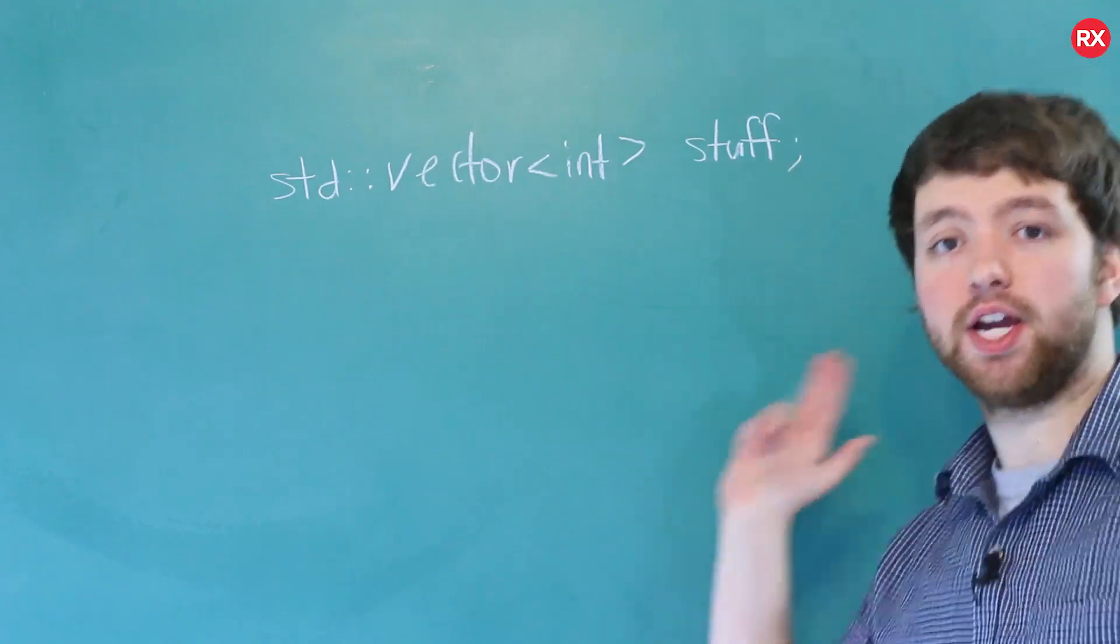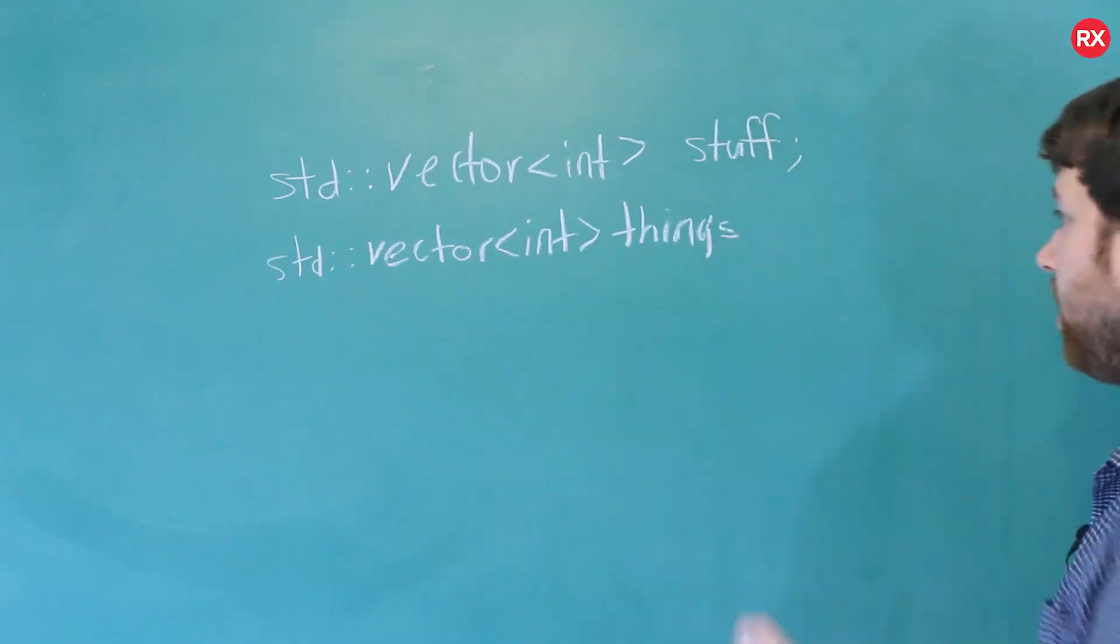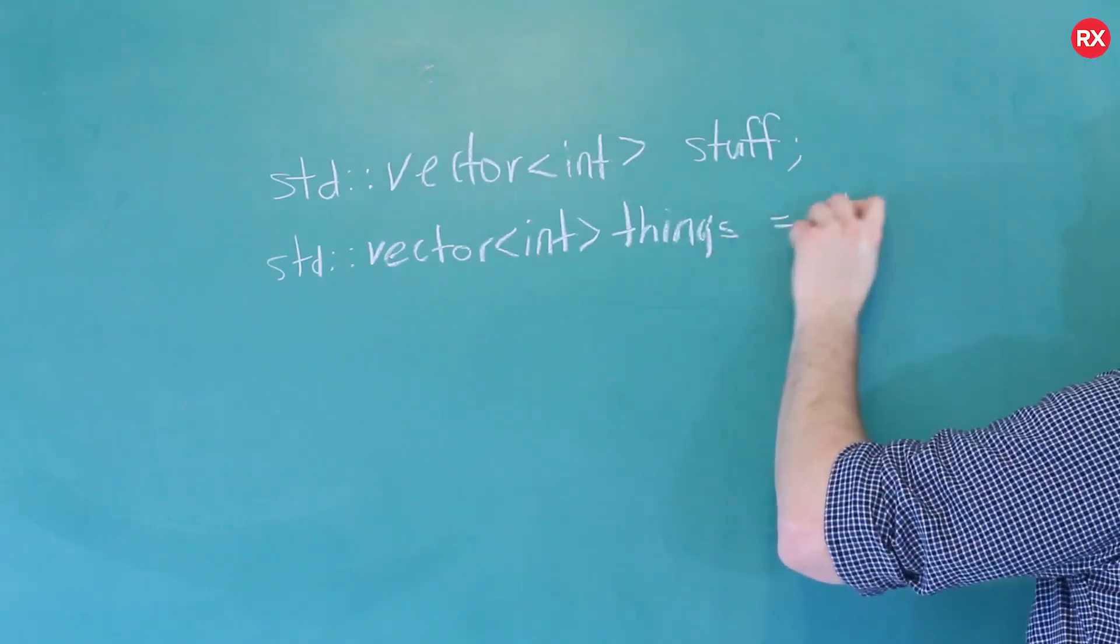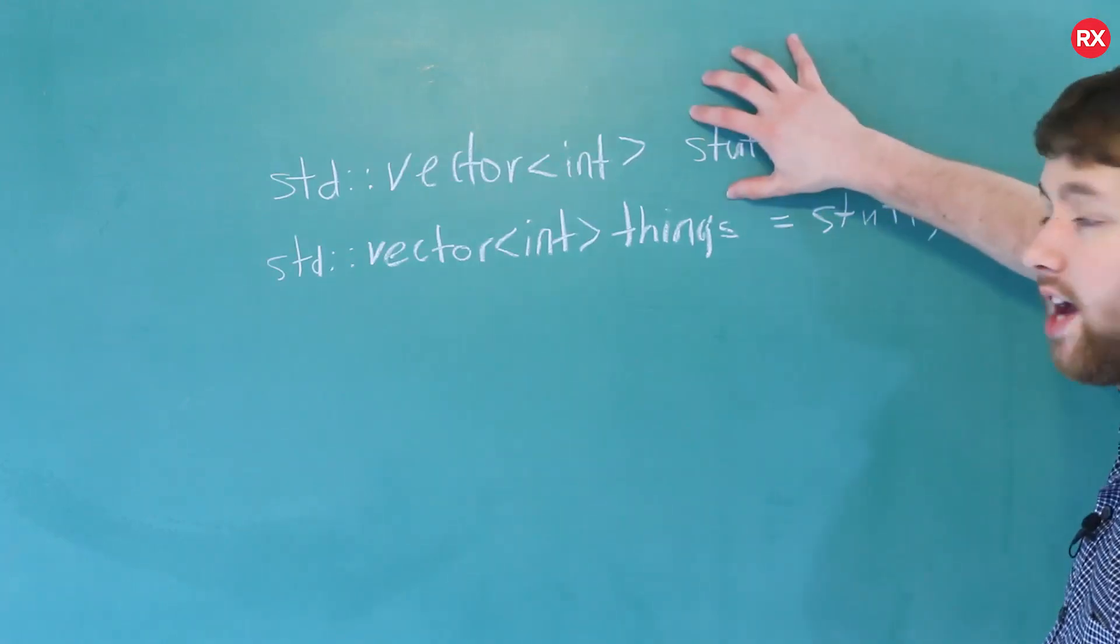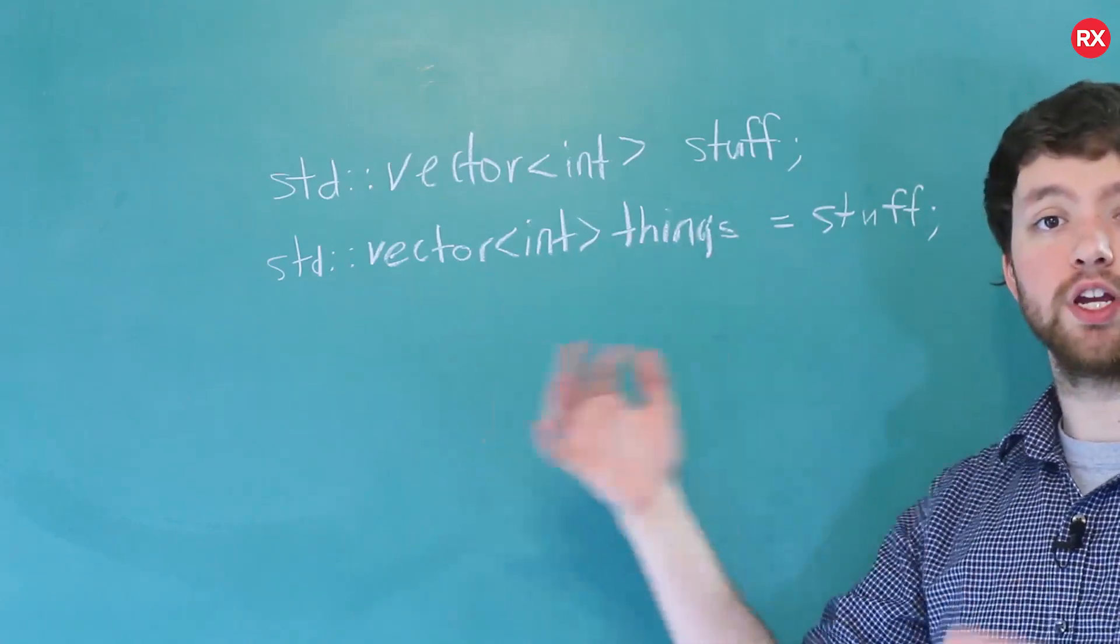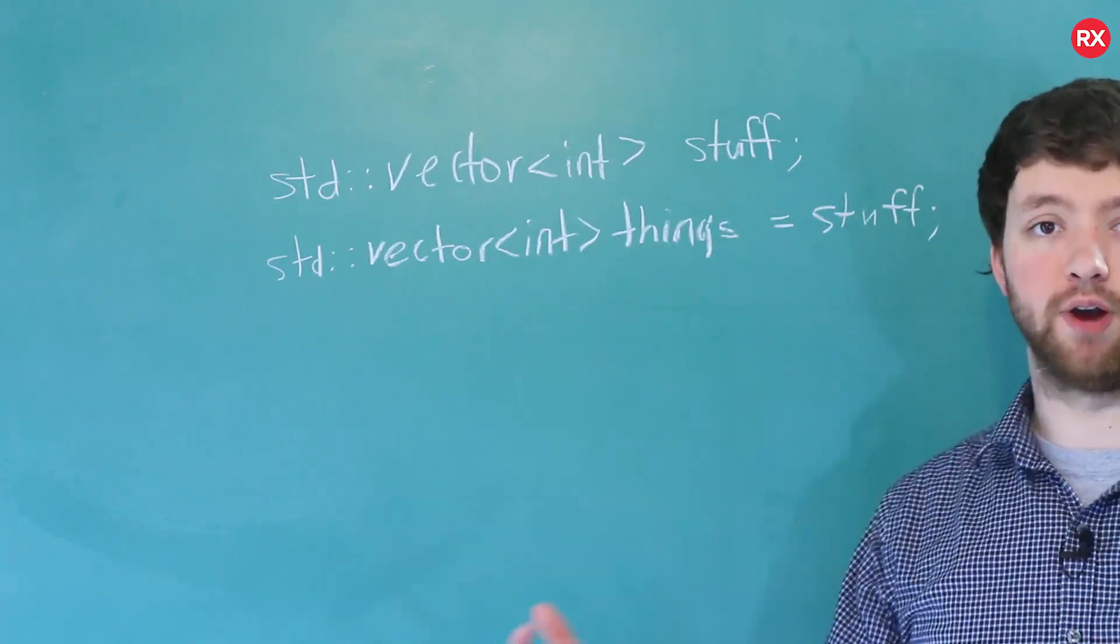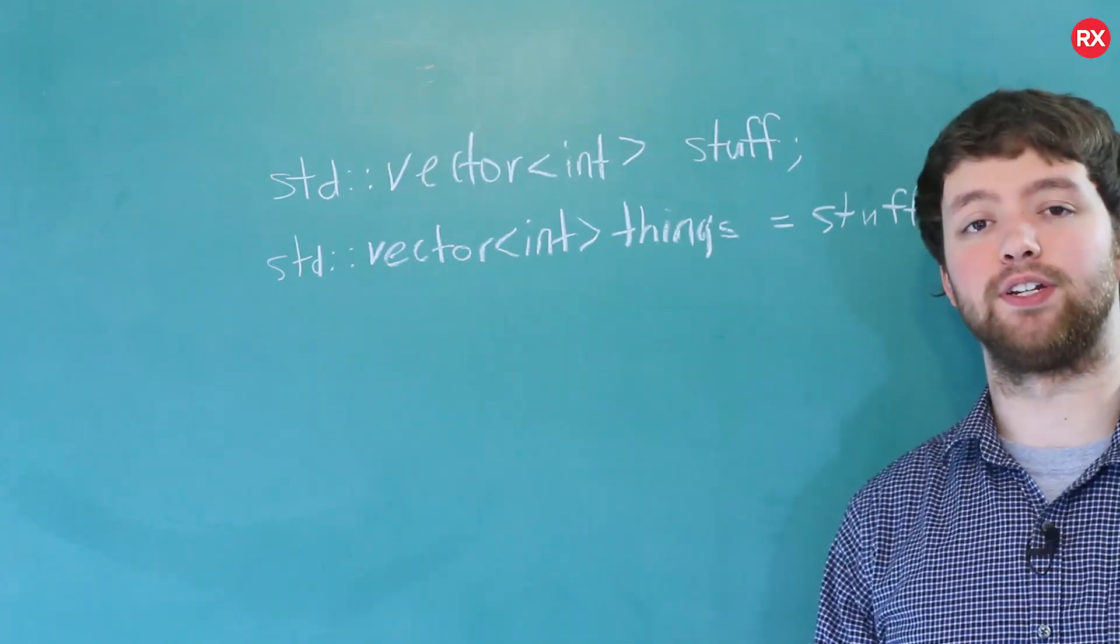Then we take stuff and we assign it back to another vector. So this one is called things and we assign it the value stuff. This is essentially going to copy that vector into this vector called things. You can do that with vectors and you can do that with templatized arrays, but you cannot do that with the standard C style arrays. It's not going to let you.